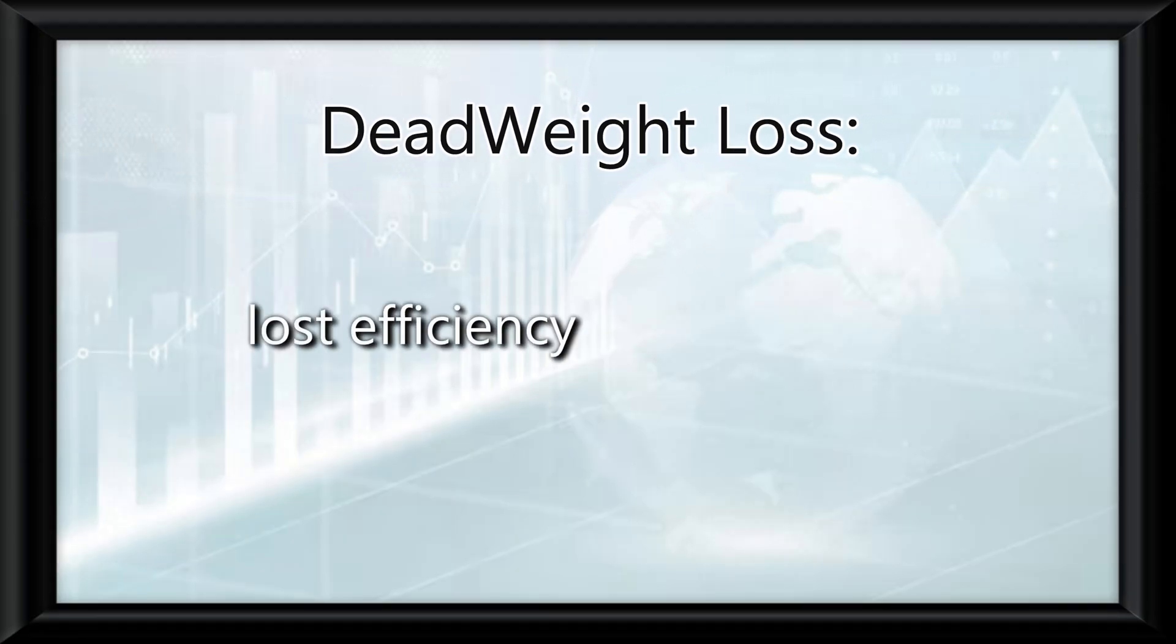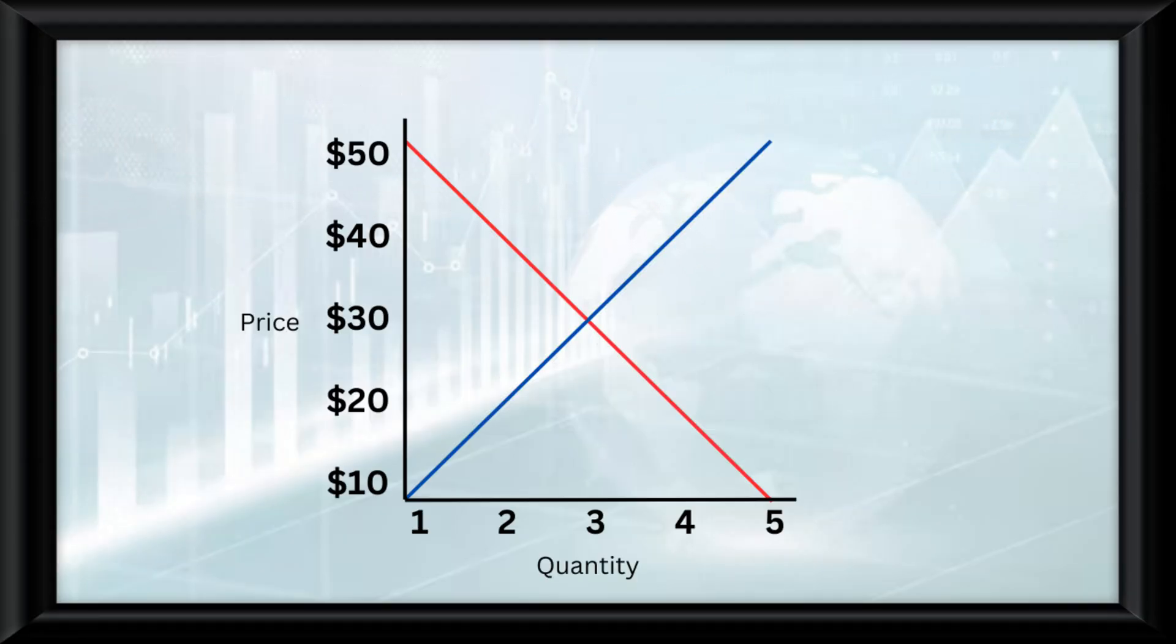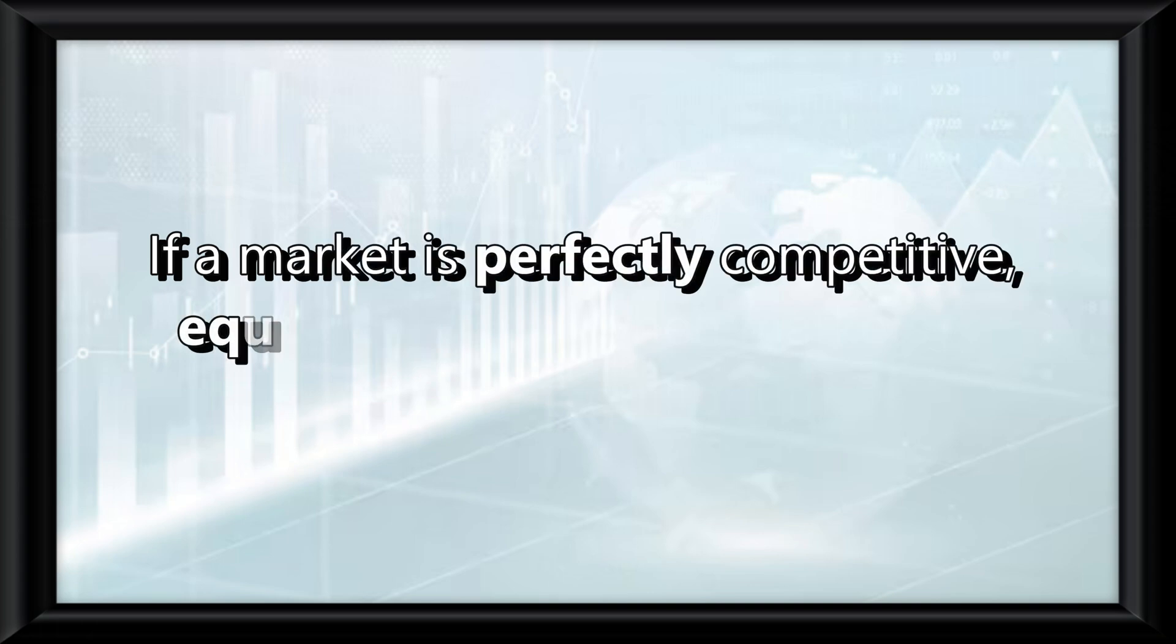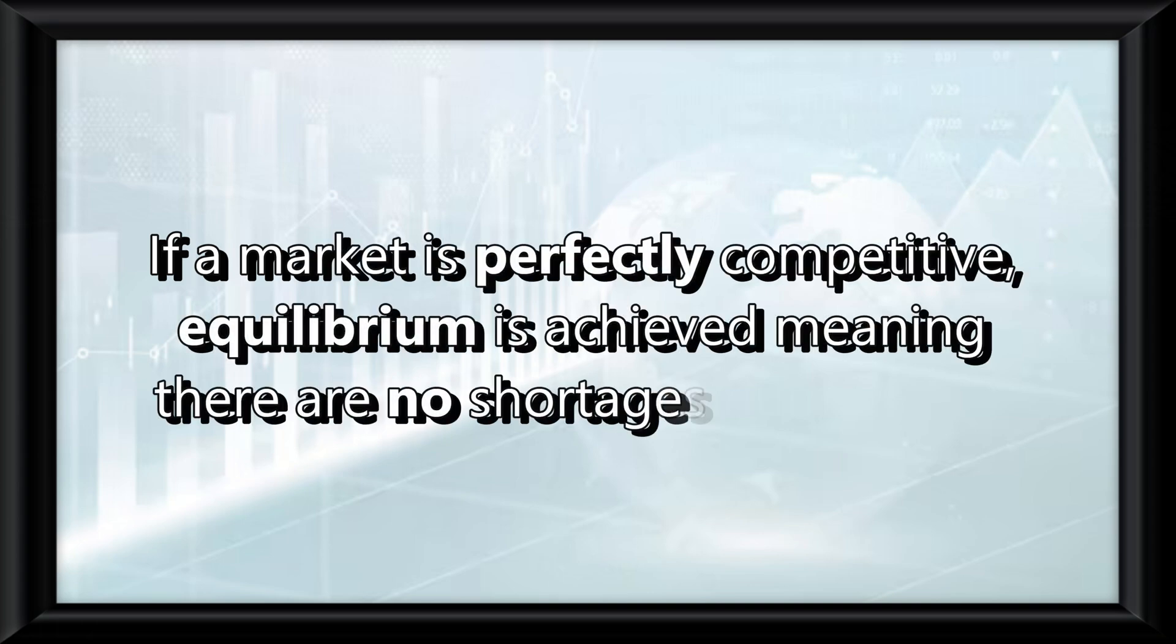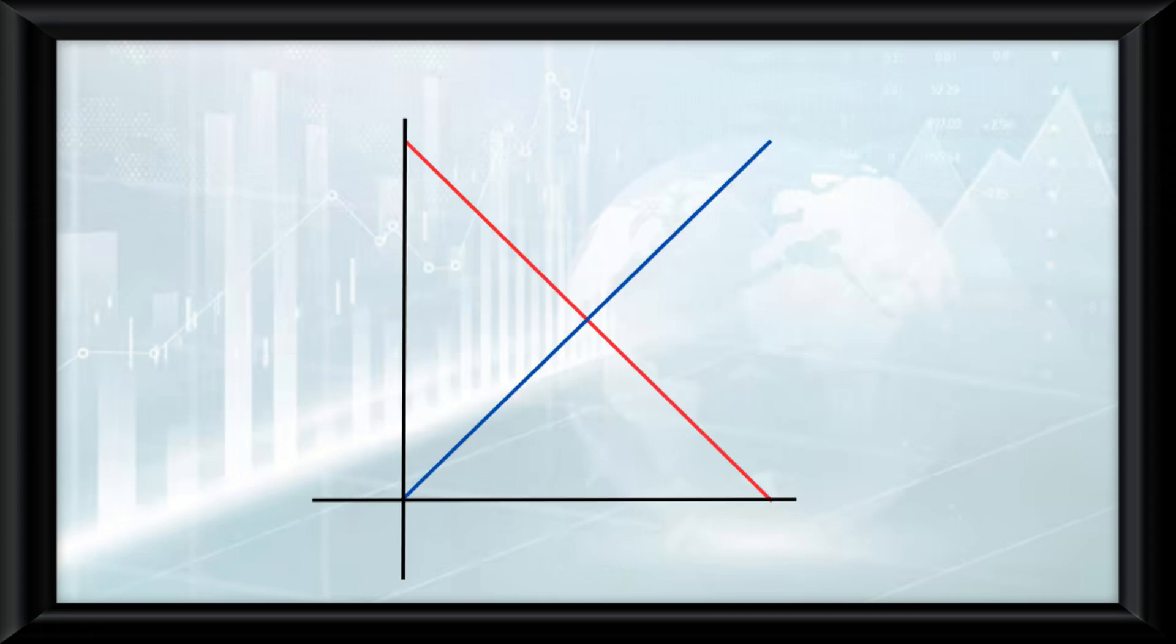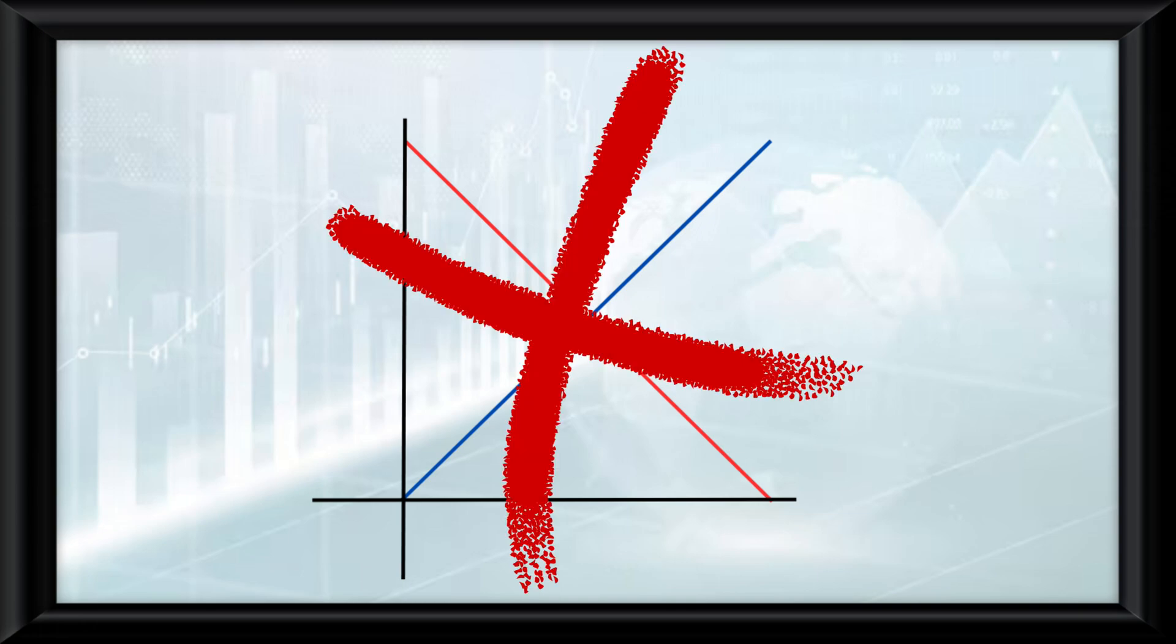Deadweight loss refers to the loss deficiency when markets aren't in equilibrium. On a graph, if we were to produce only one product, the total surplus is this, and the deadweight loss is this. If a market is perfectly competitive, equilibrium is achieved, meaning there are no shortages or surpluses. And though this graph is used in most all markets, some markets can't use it because of imperfections like ethical concerns.